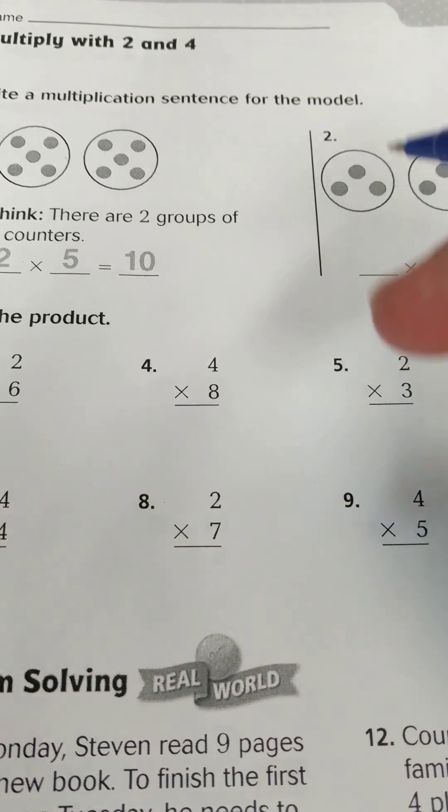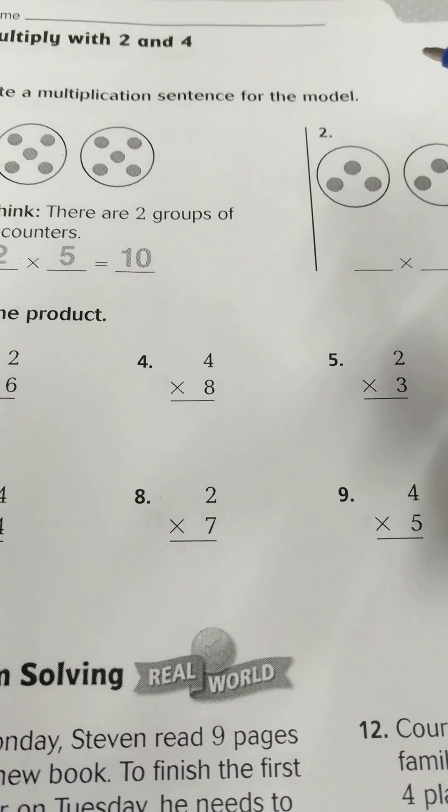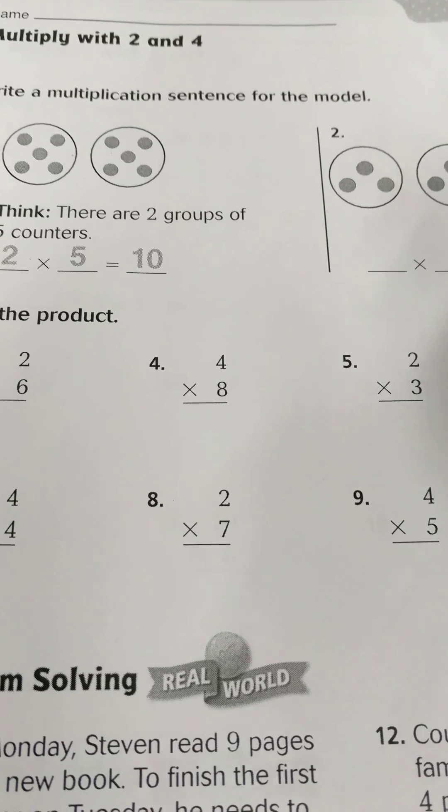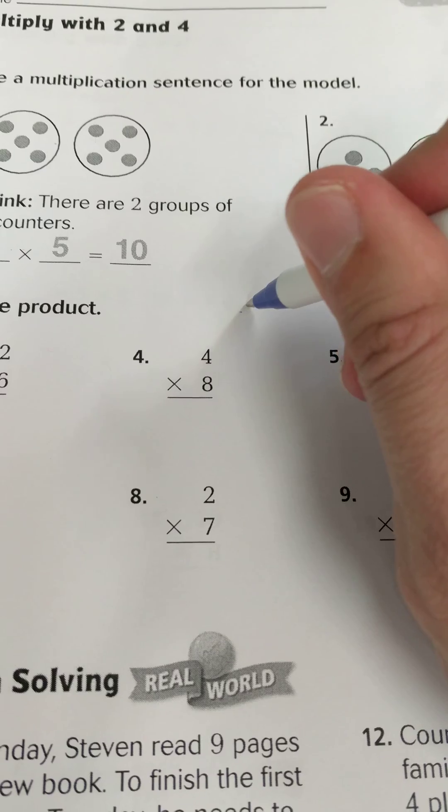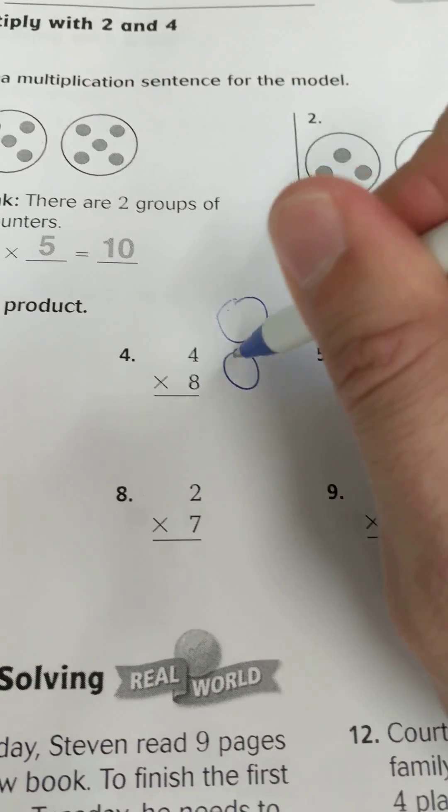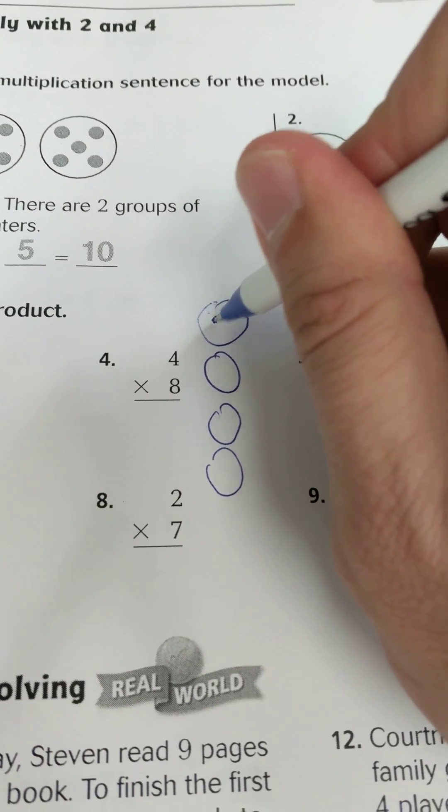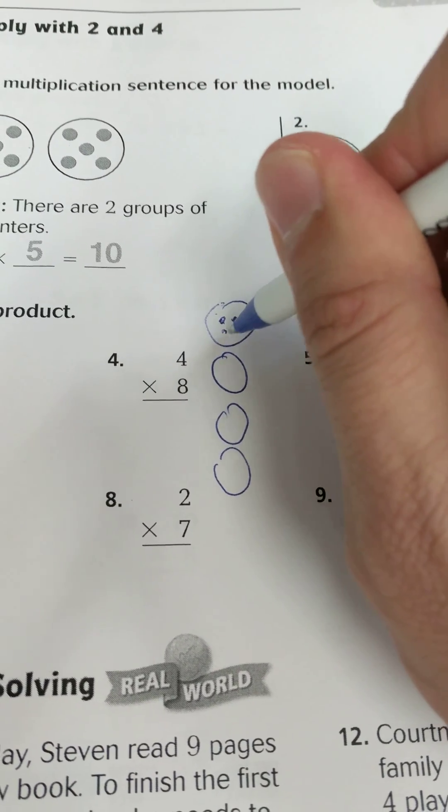Now if you're still not familiar with all your multiplication tables and you're still working on that, one way to do that is just to draw pictures, continue to draw pictures to help you understand and memorize. So I'm going to draw 4 groups, and we'll draw 8 in each group.